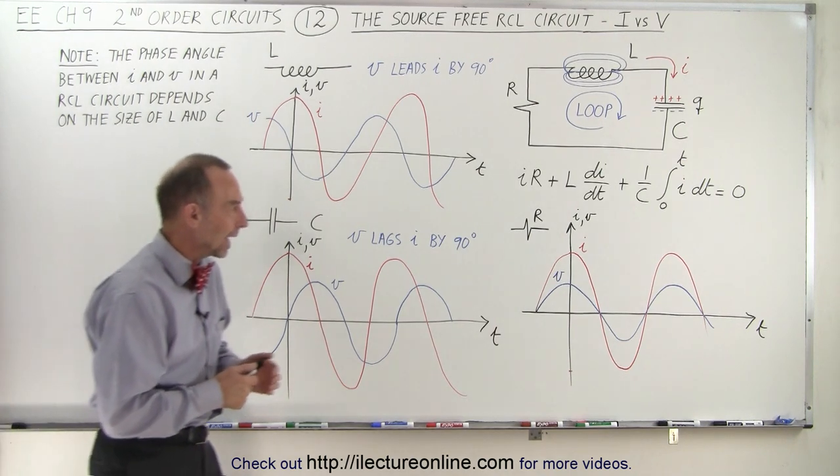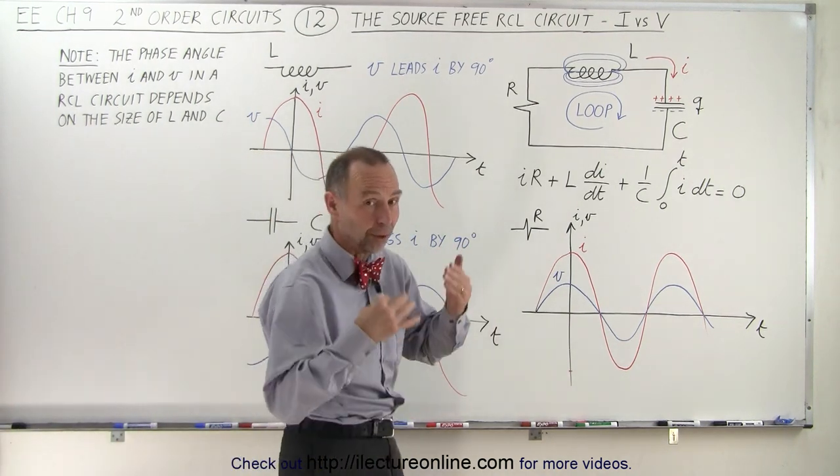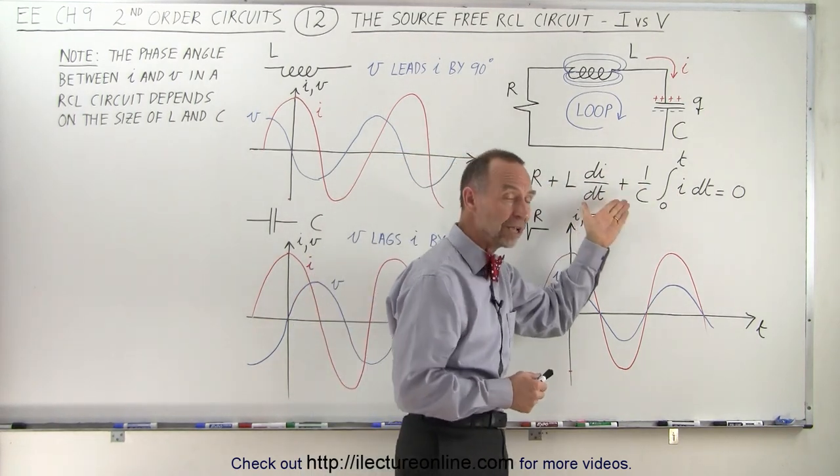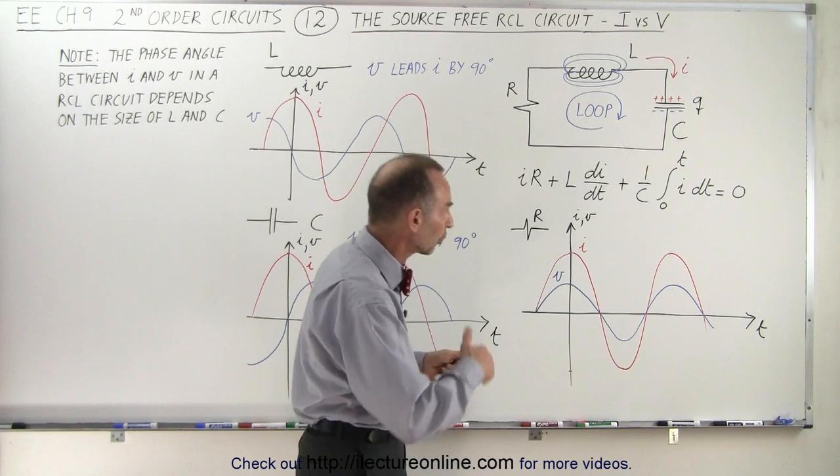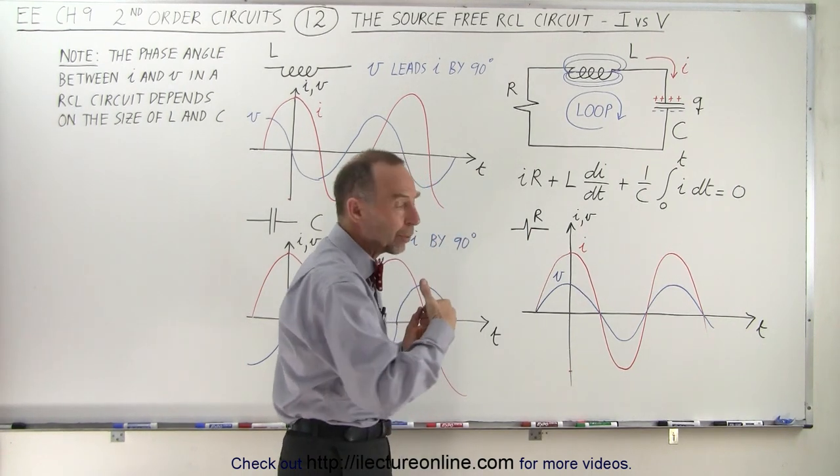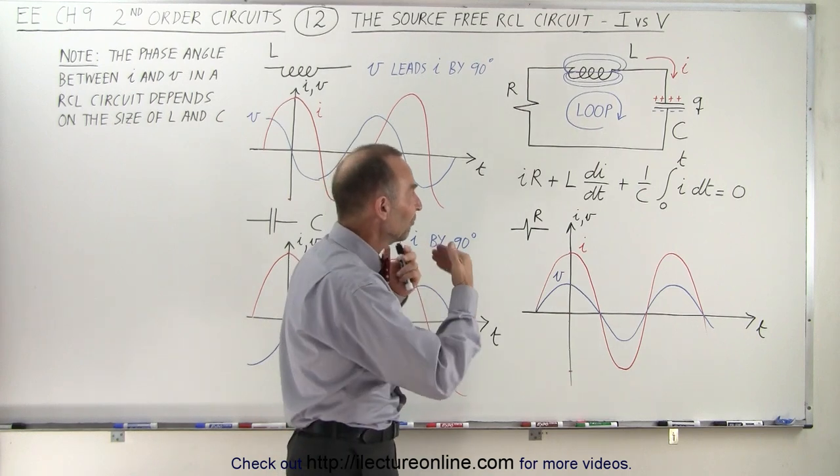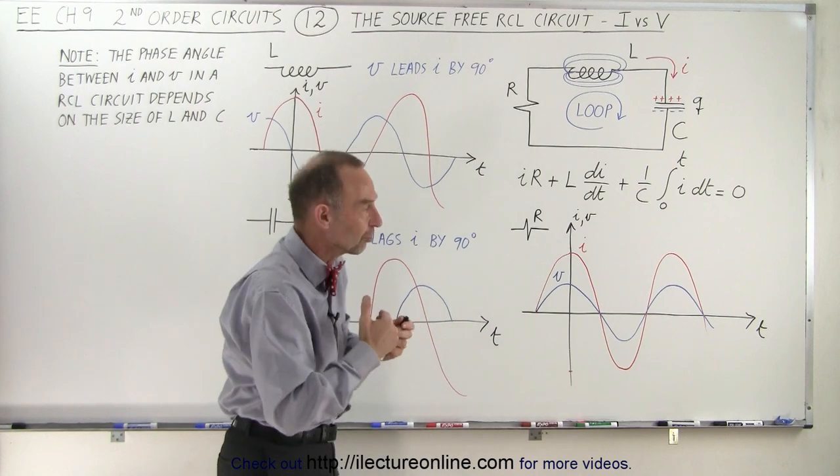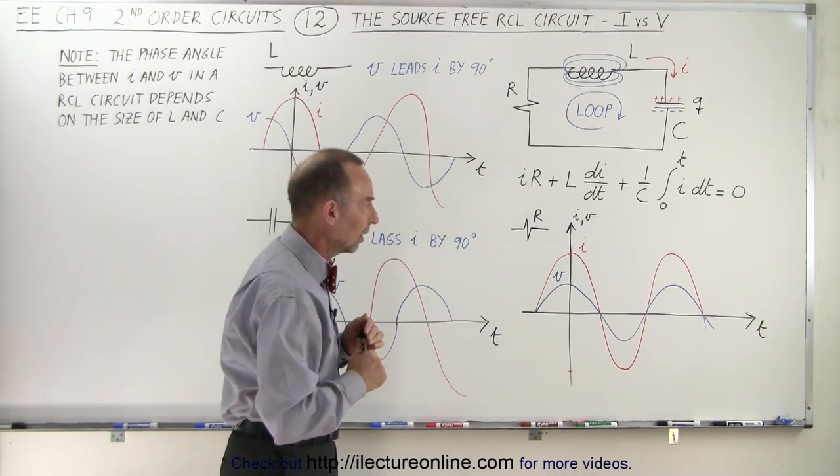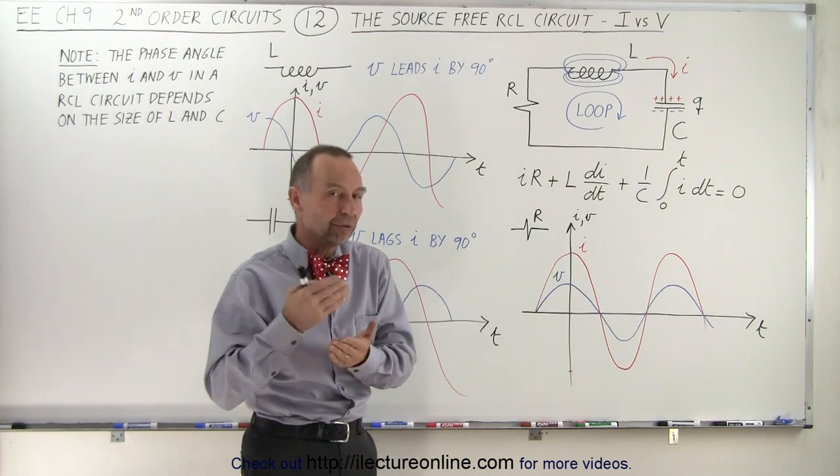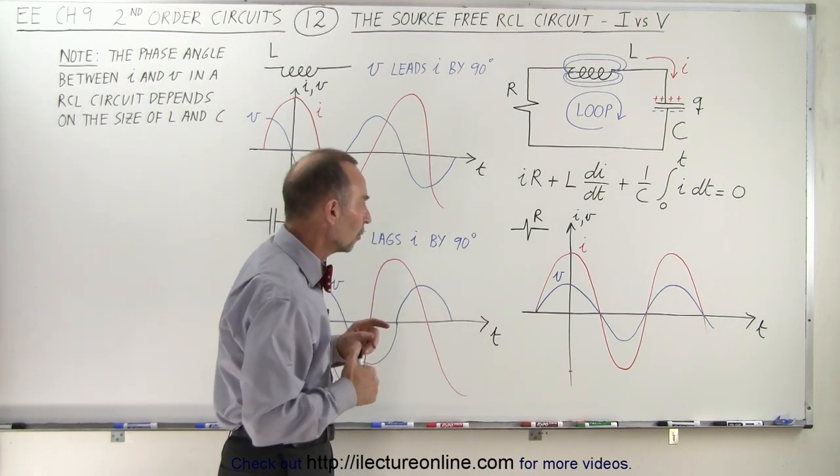So let's first take a look at the resistor. Remember, what we're ultimately trying to do is to come up with a good second order differential equation for the KVL, for the Kirchhoff's voltage loop equation, such that we can then solve the equation and find a good way of expressing the current as a function of time in a circuit like this. But first of all, let's take a look at the phase difference between the voltage and the current across our three components.